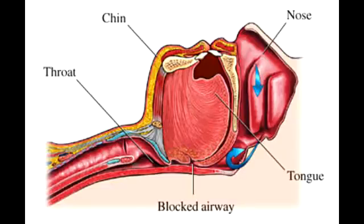What is sleep apnea? Sleep apnea is the pauses in breathing during sleep that happen for more than 10 seconds, and this can happen between 5 to 30 times in an hour. Because of these pauses in breathing, there is disrupted sleep at night, which leads to daytime sleepiness. What is the most common type of sleep apnea?